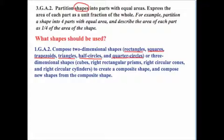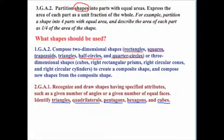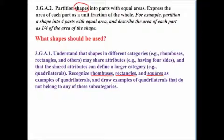Back in first grade, we have standard 1.G.A.2 that talks about composing two-dimensional shapes, and they specifically mention rectangles, squares, trapezoids, triangles, half circles, and quarter circles. In second grade, we have standard 2.G.A.1 that talks about recognizing and drawing shapes having specified attributes, and they specifically mention triangles, quadrilaterals, pentagons, hexagons, and cubes. There's also standard 3.G.A.1, a predecessor to this standard, that talks about understanding that shapes in different categories may share attributes, specifically mentioning rhombuses, rectangles, and squares.